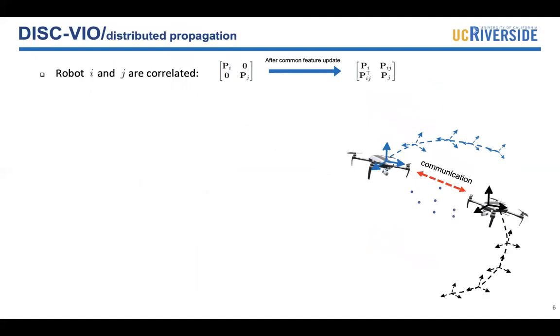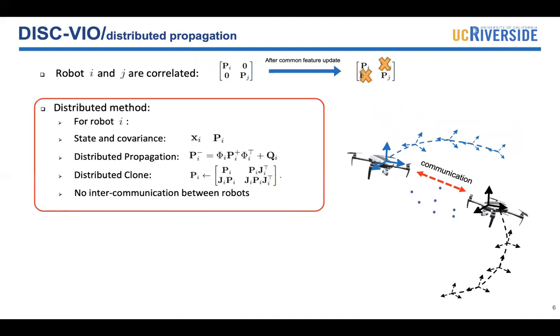Here, consider a two robot case, robot I and robot J. Once common features are used to update the state, their covariances are correlated with each other. In DISC-VIO, we drop the cross covariance P_IJ. As a result, we have distributed propagation and clone steps. Each robot can propagate and clone its state and covariance in the same way as a single robot case, so there is no need to communicate with any other robots.